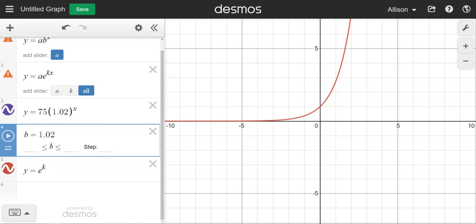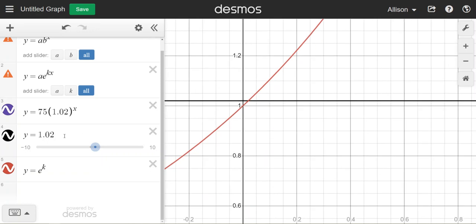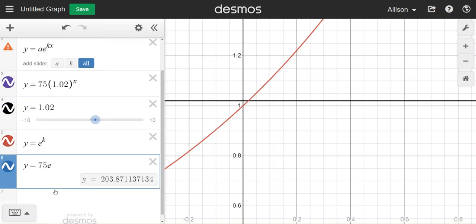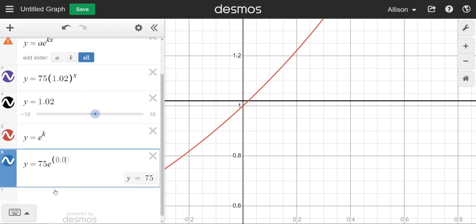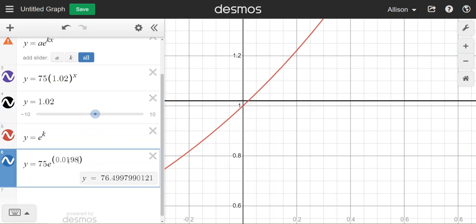Now, with b equals 1.02, that's an output value. I want to basically plug it in for my output. So I'm going to plug it in for y, and then I can look for the intersection point. So by graphing y equals my b value and y equals e to the k, I can find out that the k value is 0.198. So when I go to write my function, it's going to be y equals 75 times e to the 0.198 x.